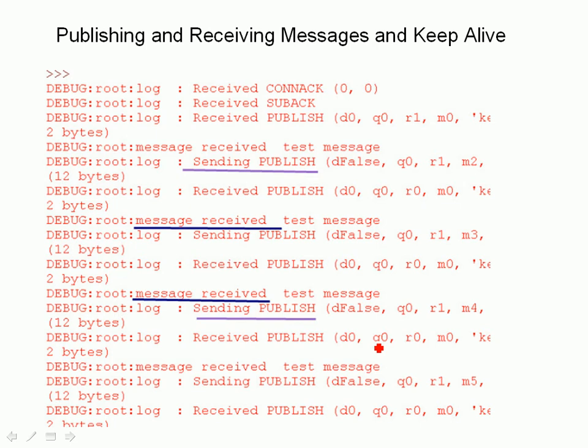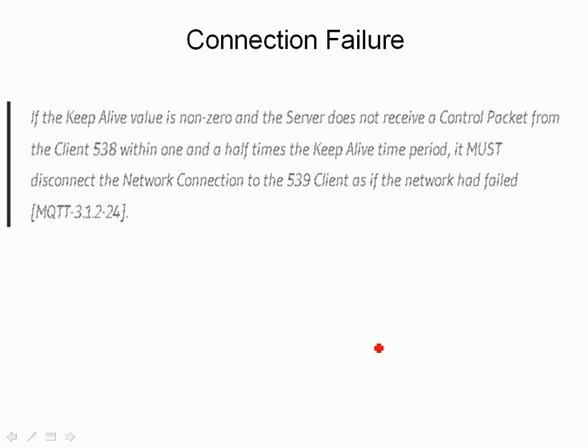So what happens when it all goes wrong? If you have a connection failure, or the Keep Alive is non-zero — if you set it to zero it actually suppresses the ping request and ping response. Providing it's non-zero, if the server doesn't receive a control packet from the client within one and a half times the Keep Alive period, it must disconnect the network connection.